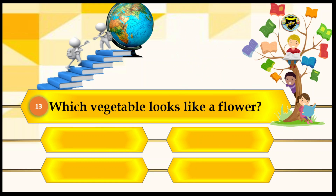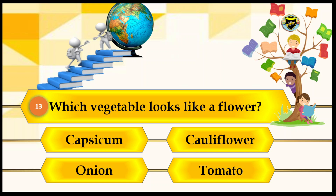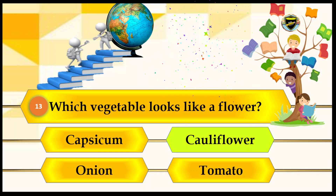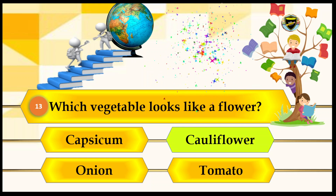Let's see the next question. Which vegetable looks like a flower? Your options are cauliflower, capsicum, onion, and tomato. The answer is cauliflower. Let's see if cauliflower is the right answer. That's the correct answer.